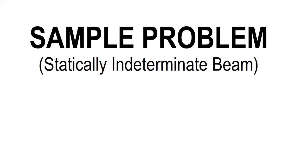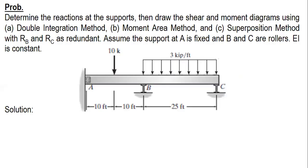I'm going to solve a sample problem about a statically indeterminate beam. The problem is to determine the reactions at the supports, then draw the shear and moment diagrams using the double integration method, moment area method, and superposition method with RB and RC as redundant. Assume the support at A is fixed, and B and C are rollers. EI is constant.